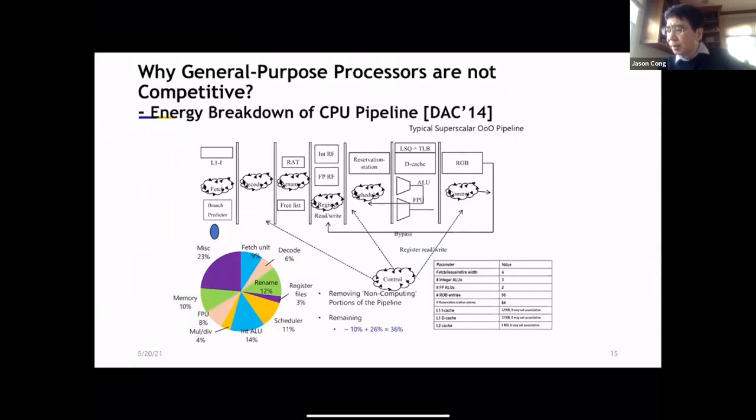So we did a study back in 2014, just to understand where the inefficiency is coming from. So think of a modern out-of-order processor. First you've got to fetch the instruction from your L1 cache. So that takes 9% of energy. And then you've got to decode it. You'll find out whether it's an add or a multiplier. So that's another 5%. And you may actually have to go through a renaming stage to minimize the dependency. So that's 12%. Then you get the data from the register files. That's 3%. If out-of-order processor, your data may not be ready. So you wait in some scheduler. So that's another 11%.